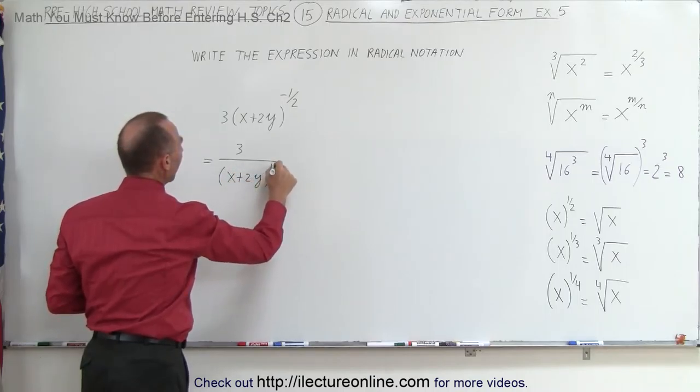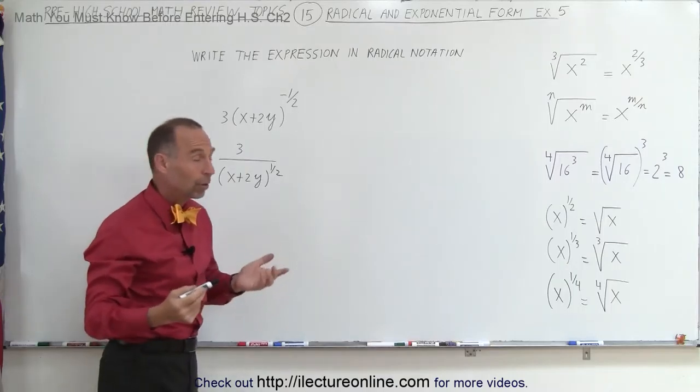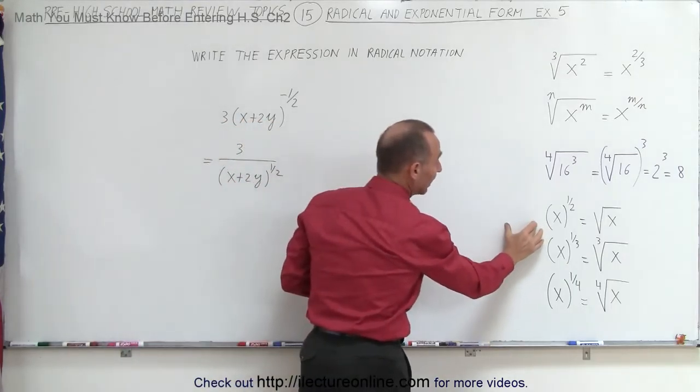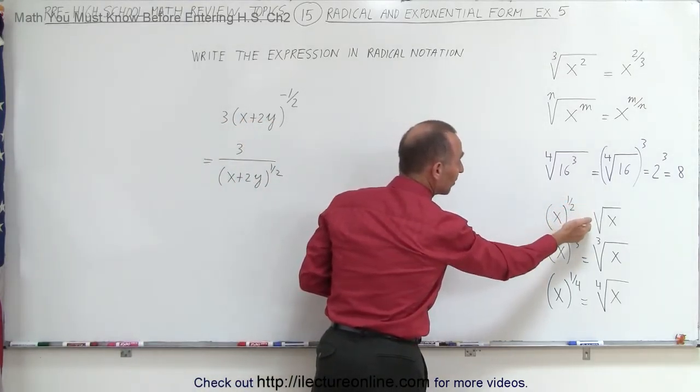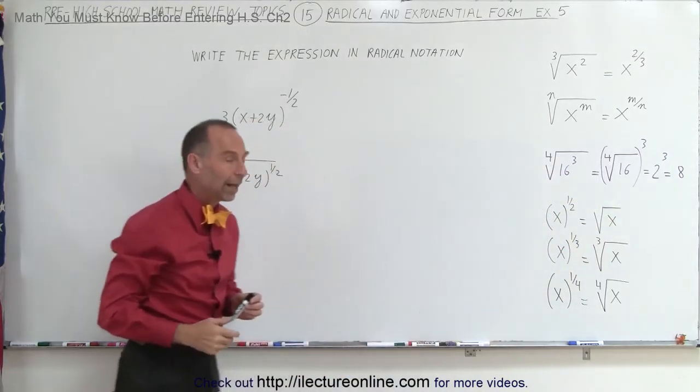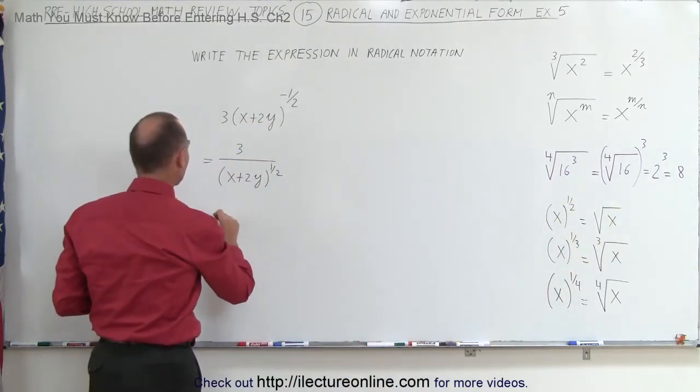Now we're going to employ this rule right here: anything raised to the 1/2 power is simply the square root of that using a radical symbol. So this can be written as 3 divided by the square root of (x + 2y).